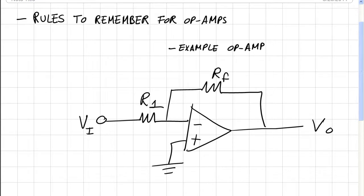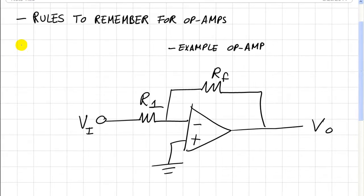Let's go ahead and write the first rule which is that the voltage at the inverting input is equal to the voltage at the non-inverting input and this is due to feedback.